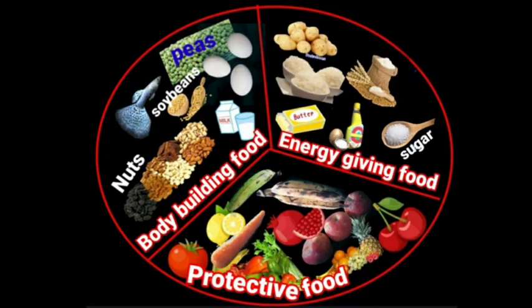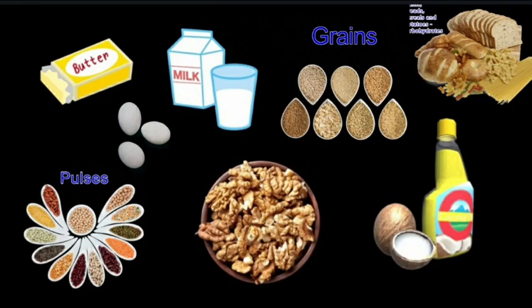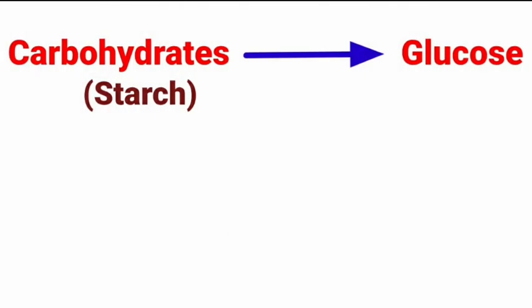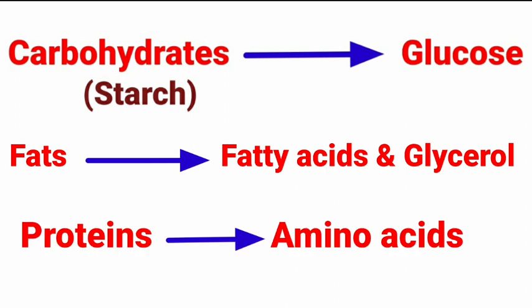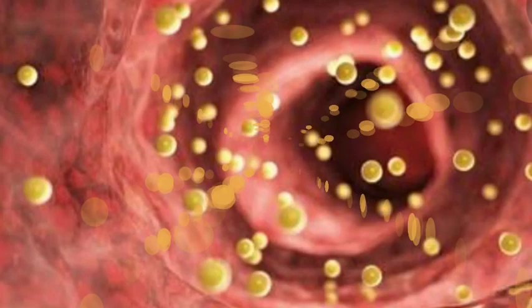Carbohydrates, fats and proteins are large insoluble substances which cannot pass through the walls of our intestine and get absorbed in that form. Therefore, these substances are broken down into small water-soluble substances by the process of digestion. Carbohydrates get broken down into simple sugar called glucose, while fats break into fatty acids and glycerol, and proteins into amino acids. These simpler compounds are easily absorbed by the walls of the small intestine into the blood.